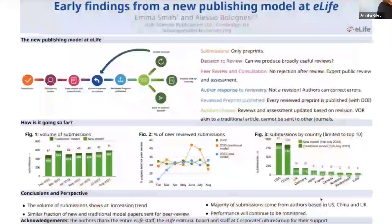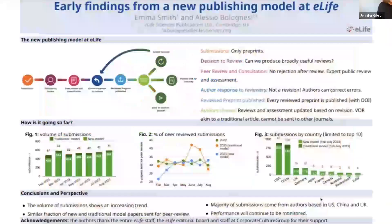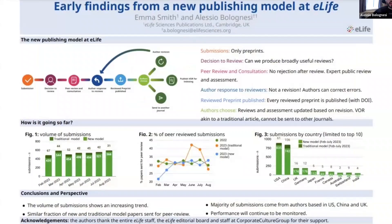We're going to close out with Alessio, then Kieran, Alicia, and then Yvonne. Alessio, will you please start your four minutes now? Thanks, Jennifer, and thanks to the organizers for the invitation. I'm Alessio. I'm head of Journal Development at eLife. I'm happy to tell you quickly about the new publishing model that we launched at the end of January this year. The top part of the poster shows a diagram that I will guide you through. The first step is submission — at this stage we consider only preprints. Following this, we decide which preprints we review and which not, a decision taken by the editorial board at eLife, a group of about 800 scientists active in their fields.